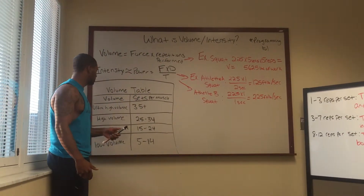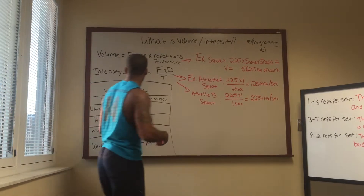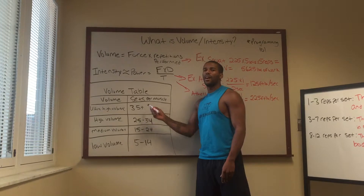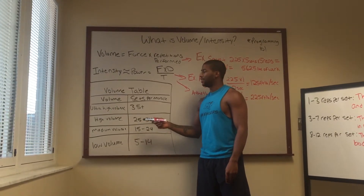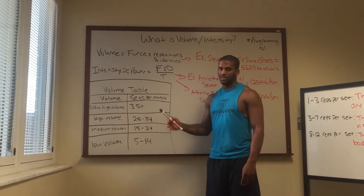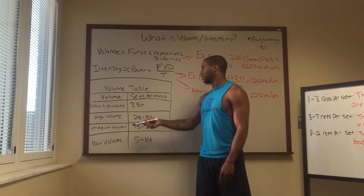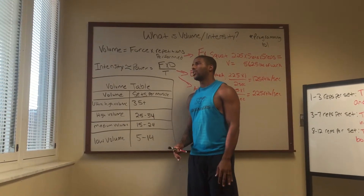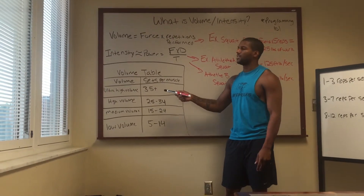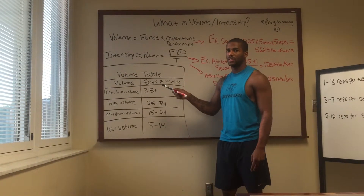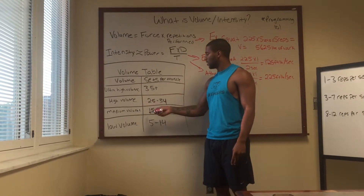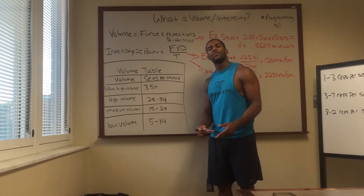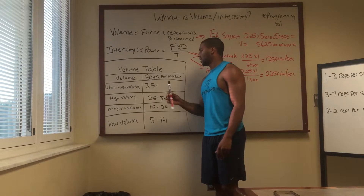The volume table is organized by sets per muscle group. If you're looking at 35-plus sets in the gym, you're in ultra-high volume territory. 25 to 34 sets is high volume — so when people say they're doing high volume in the gym, they're in that 25 to 34 sets range — sets, not reps. Medium volume is 15 to 24 sets, and low volume is 5 to 14 sets.